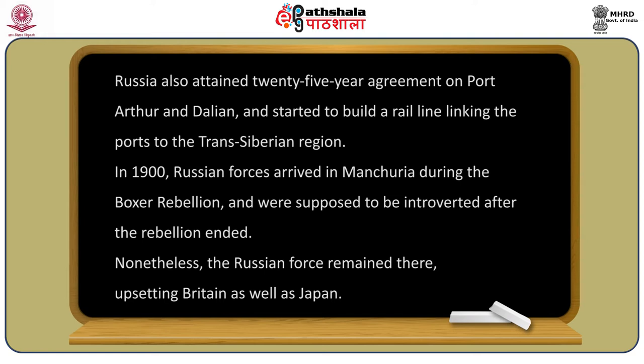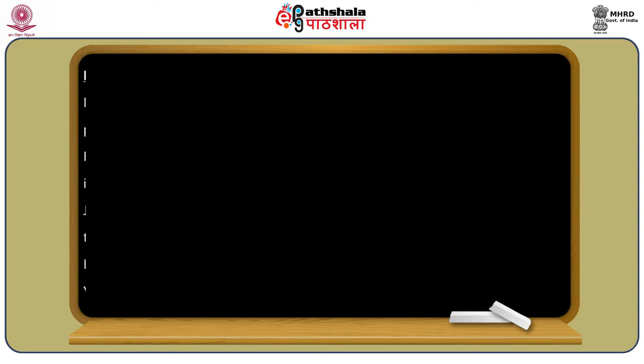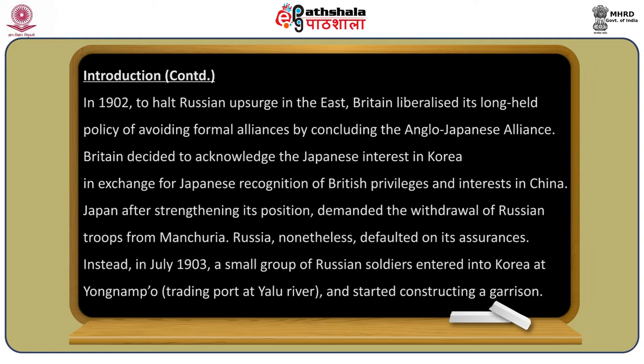In 1900, Russian forces arrived in Manchuria during the Boxer Rebellion and were supposed to be withdrawn after the rebellion ended. Nonetheless, the Russian forces remained, upsetting both Britain and Japan. In 1902, to halt Russian advance in the East, Britain liberalized its long-held policy of avoiding formal alliances by concluding the Anglo-Japanese alliance. Britain agreed to acknowledge Japanese interests in Korea in exchange for Japanese recognition of British privileges and interests in China.